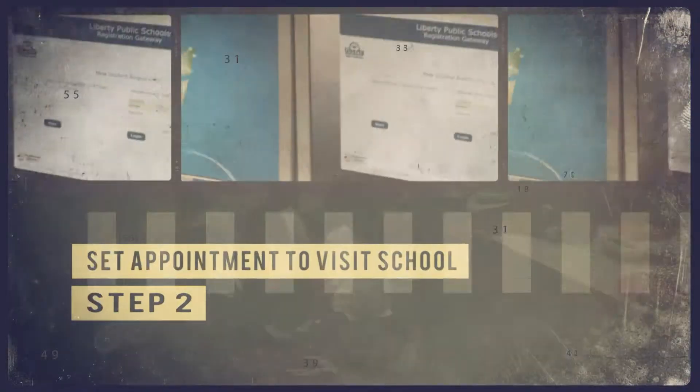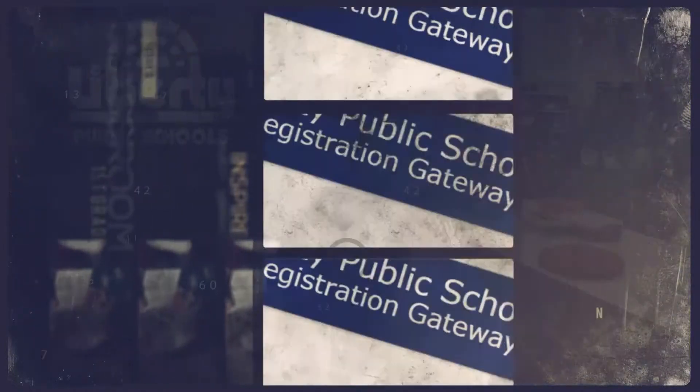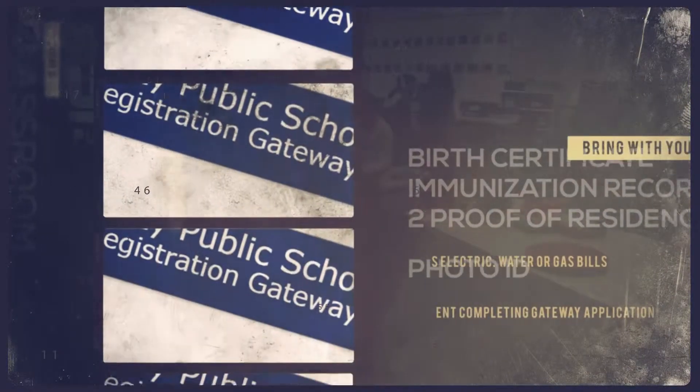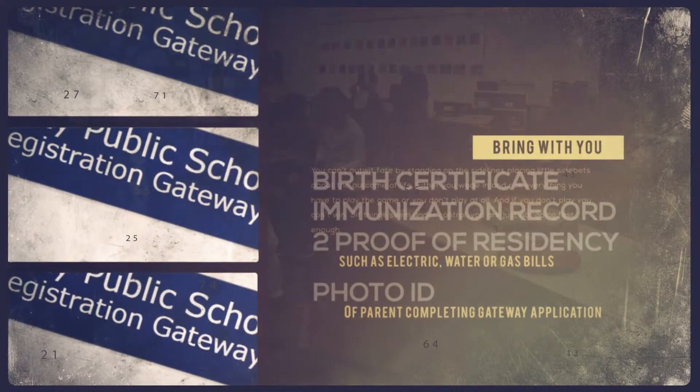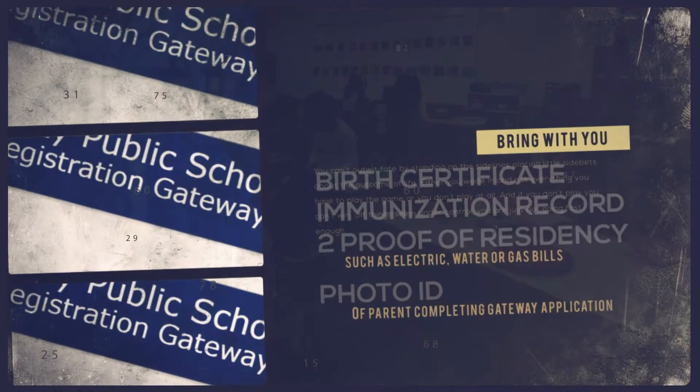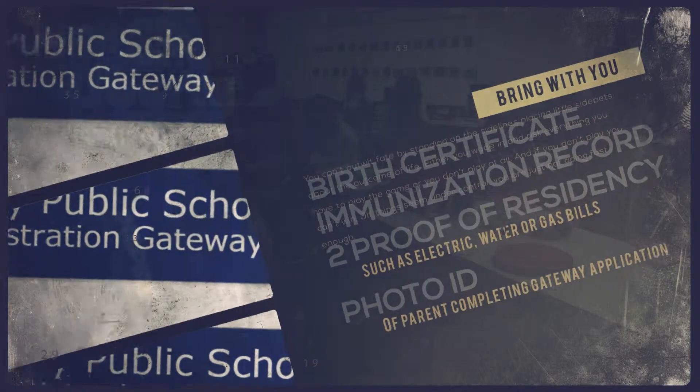Once you've completed the registration in registration gateway, you'll be able to set an appointment at your school. You'll need to bring a birth certificate, immunization records, two proofs of residency such as electric, water, or gas bills, and a photo ID of the parent that completed the registration gateway.